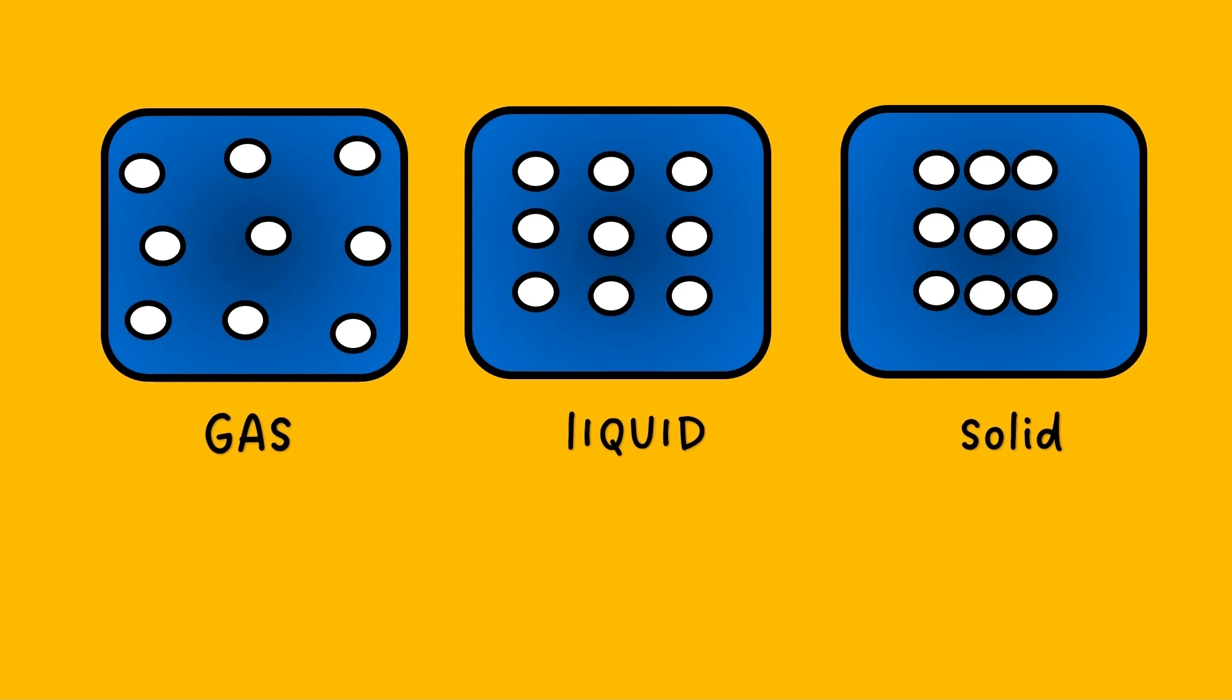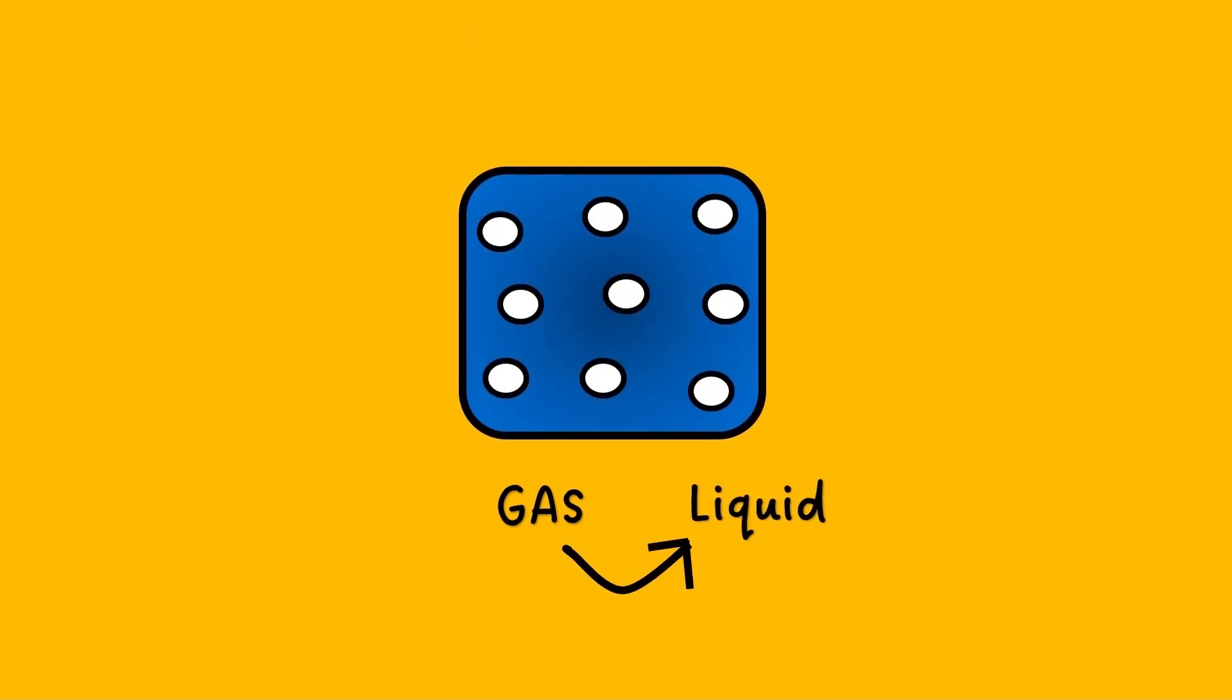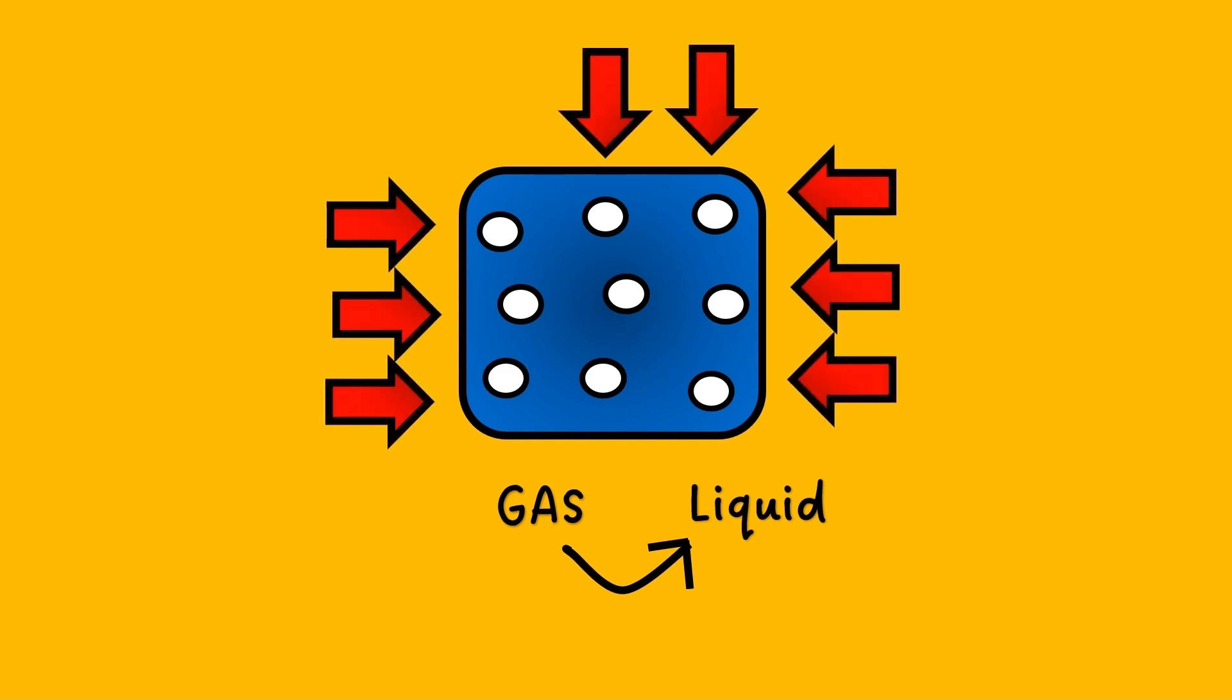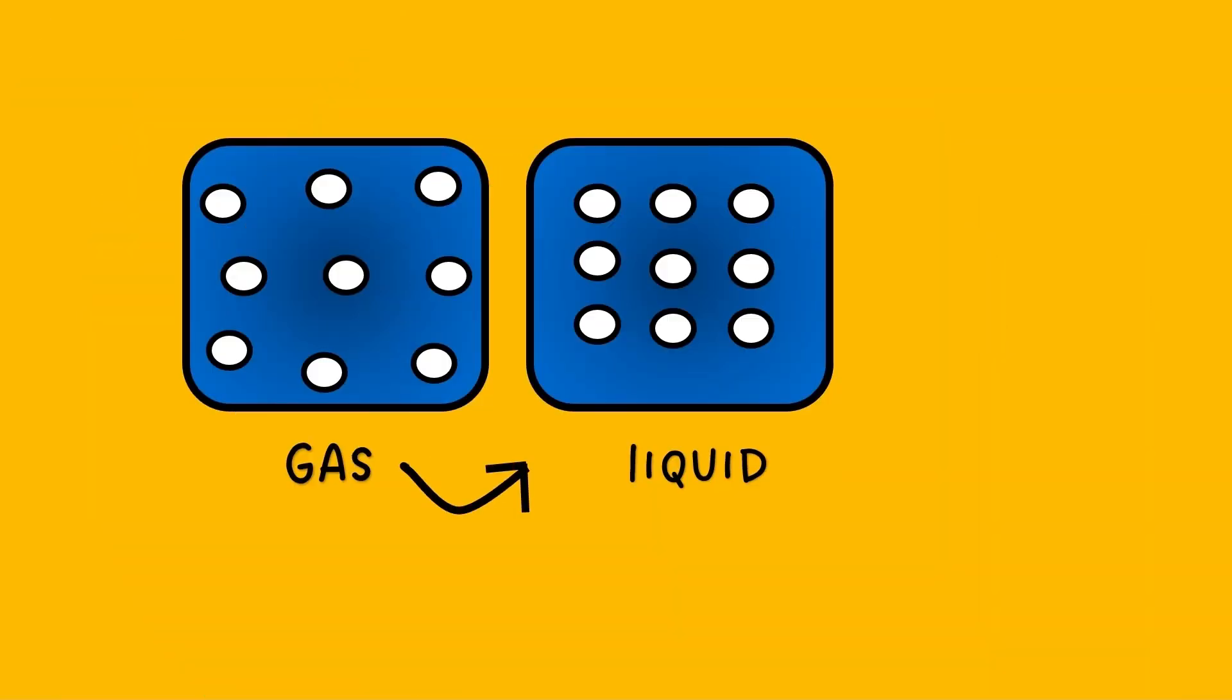This concept is very important. If you want to convert anything from gas to liquid, basically we need to bring the molecules together. One option is we use force, so we put a lot of pressure and the molecules come together. This is the phenomenon behind compressed natural gas. If you want to convert from gas to liquid without pressure, there is another way possible: you cool the temperature so the molecules have less energy to move or vibrate.